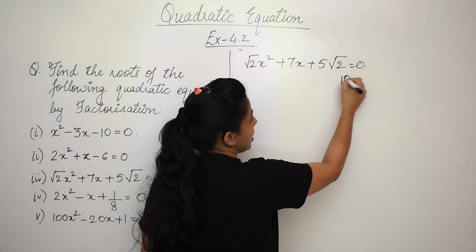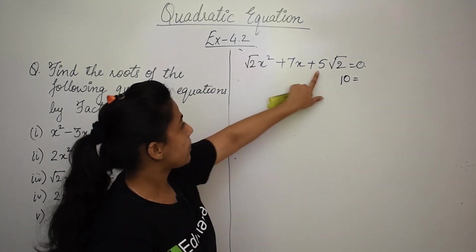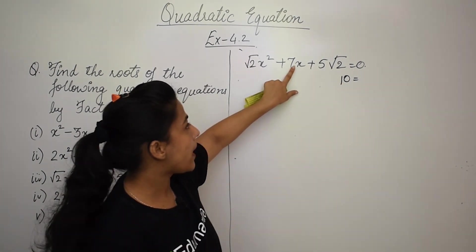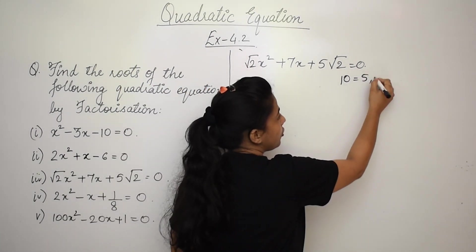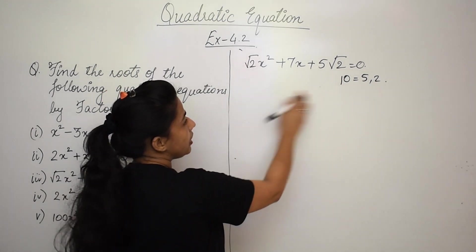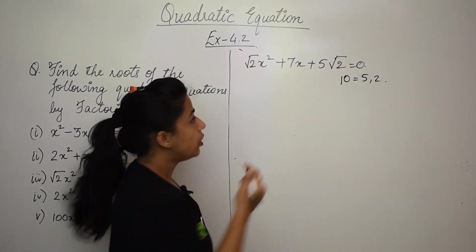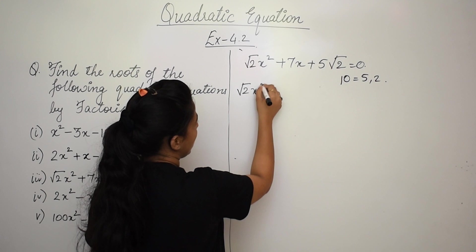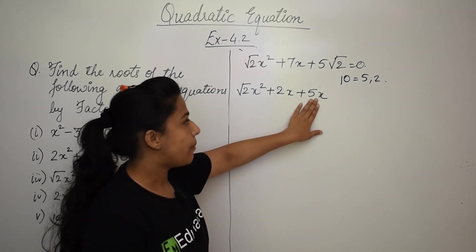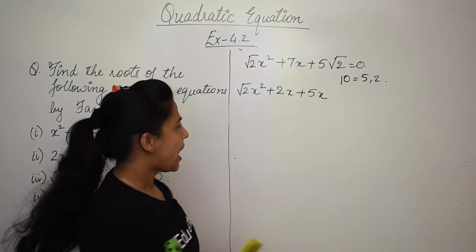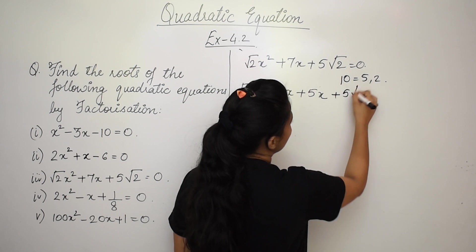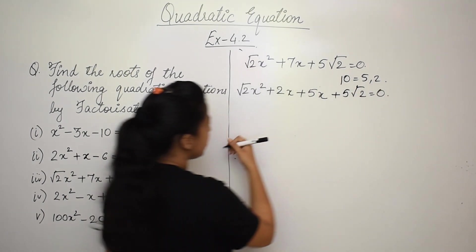Since 10 is positive and the sum should be 7, both factors are positive. 5 × 2 = 10 and 5 + 2 = 7. So we split 7x into 5x and 2x, writing √2·x² + 2x + 5x + 5√2 = 0. I write 2x first because √2 can be taken as a common factor with the first term.